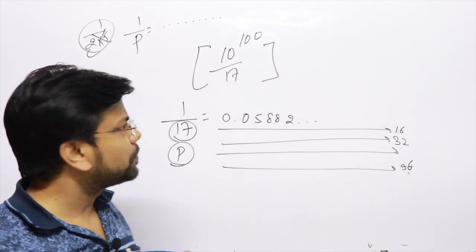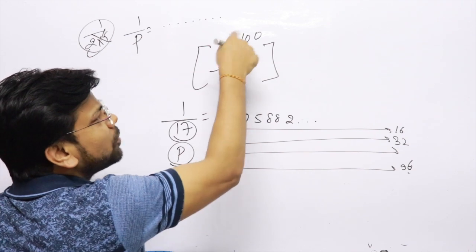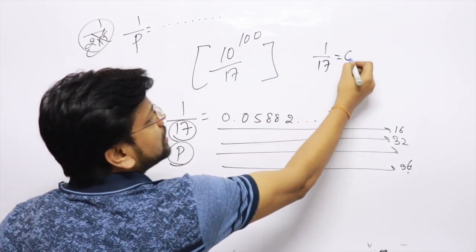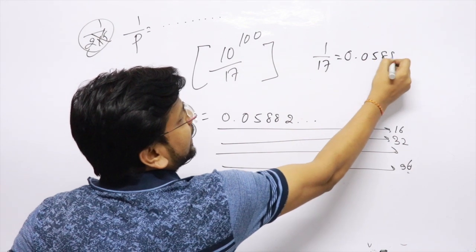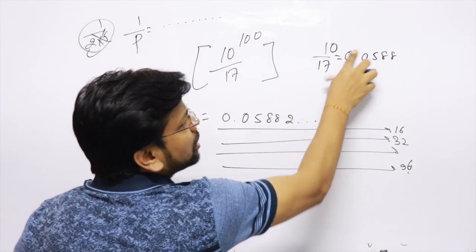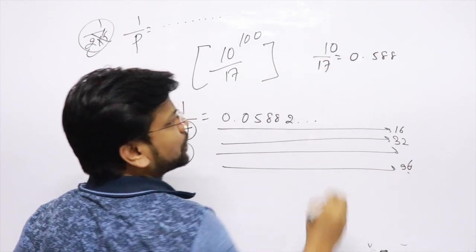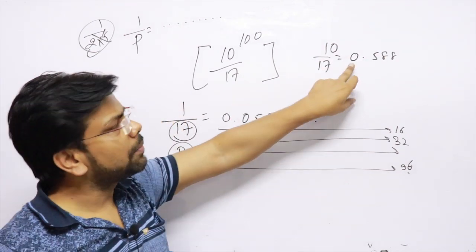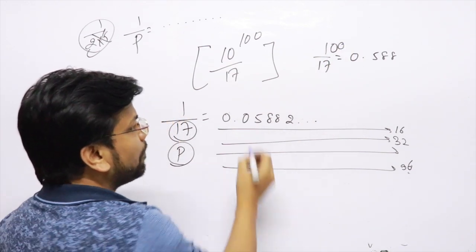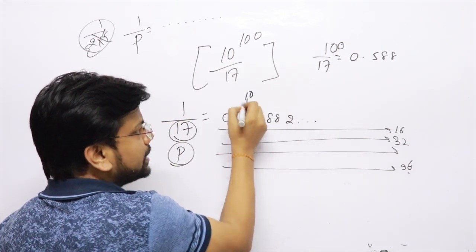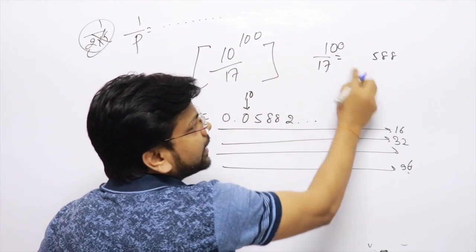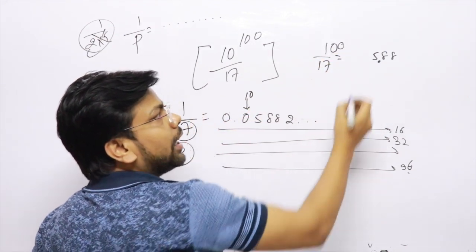Now if 1 by 17 is 0.0588, and I ask you what is 10 by 17, then the decimal point will shift and the integer will be 0. If I ask about 100, if you do 100 then the point comes here, so 100's integer will be 5.